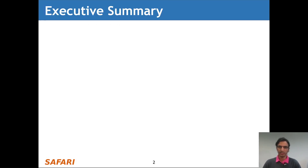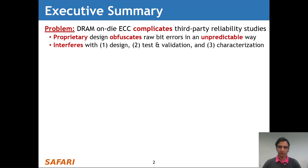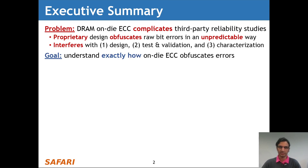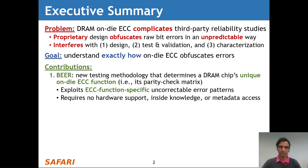First, I'm going to start out with a high-level summary of this talk. The problem that we tackle in this work is that DRAM on-die ECC complicates third-party reliability studies. This is because its proprietary design obfuscates raw bit errors in an unpredictable way, and this interferes with design, test and validation, and characterization studies. To overcome this problem, our goal is to understand exactly how on-die ECC obfuscates errors, and to achieve this goal, we make two contributions in this work.